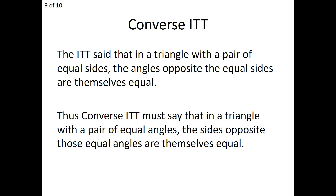To finish off our lesson, let's talk about the converse of ITT. I know we've already seen this one before, but we're going to revisit and prove it, and it's going to be much easier to do. Recall that the ITT says that if we're given a triangle in which two sides are equal, then the angles opposite those two sides are themselves equal. The converse ITT reverses our given and conclusion: if a triangle has two equal angles, then the sides opposite those two equal angles are themselves equal. Let's prove this again — we saw it back in chapter 3 by an indirect method. This one will be a direct method now that we have a new shortcut to triangle congruence.